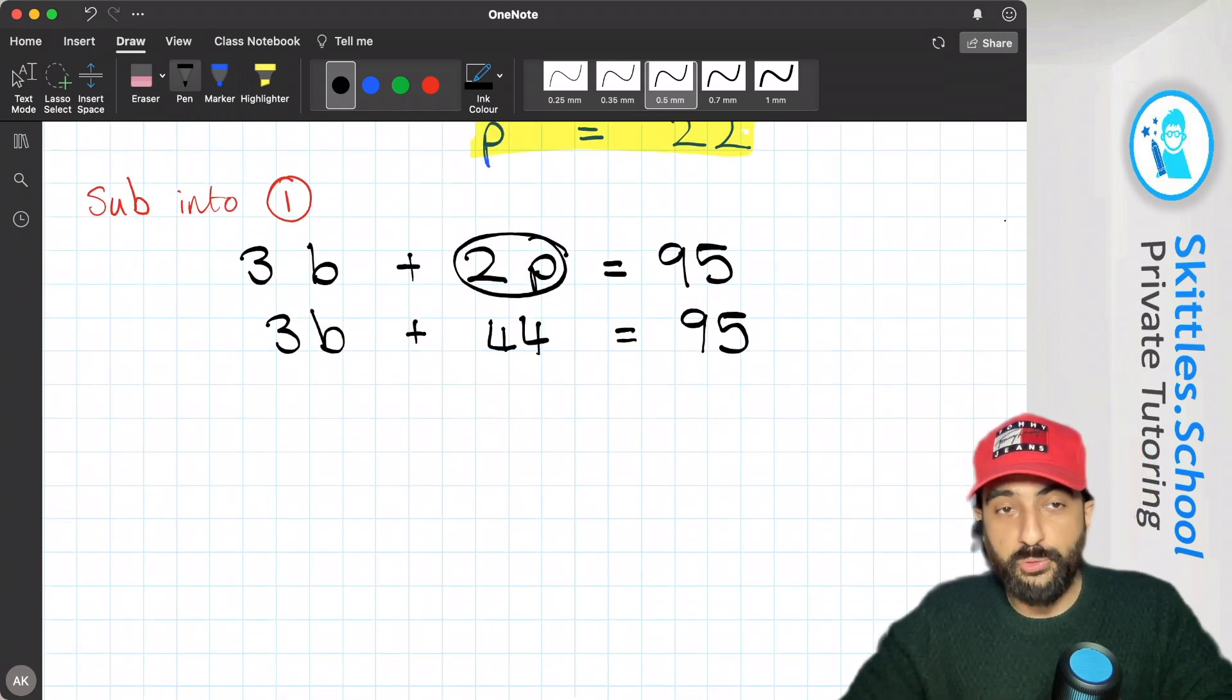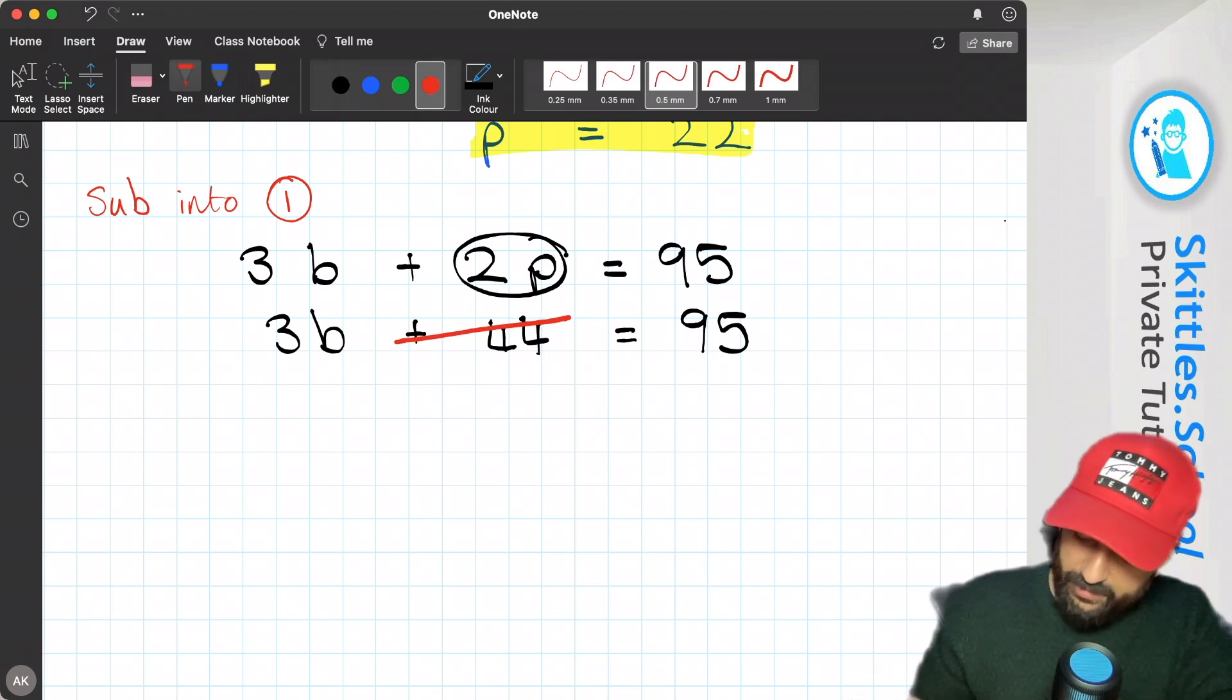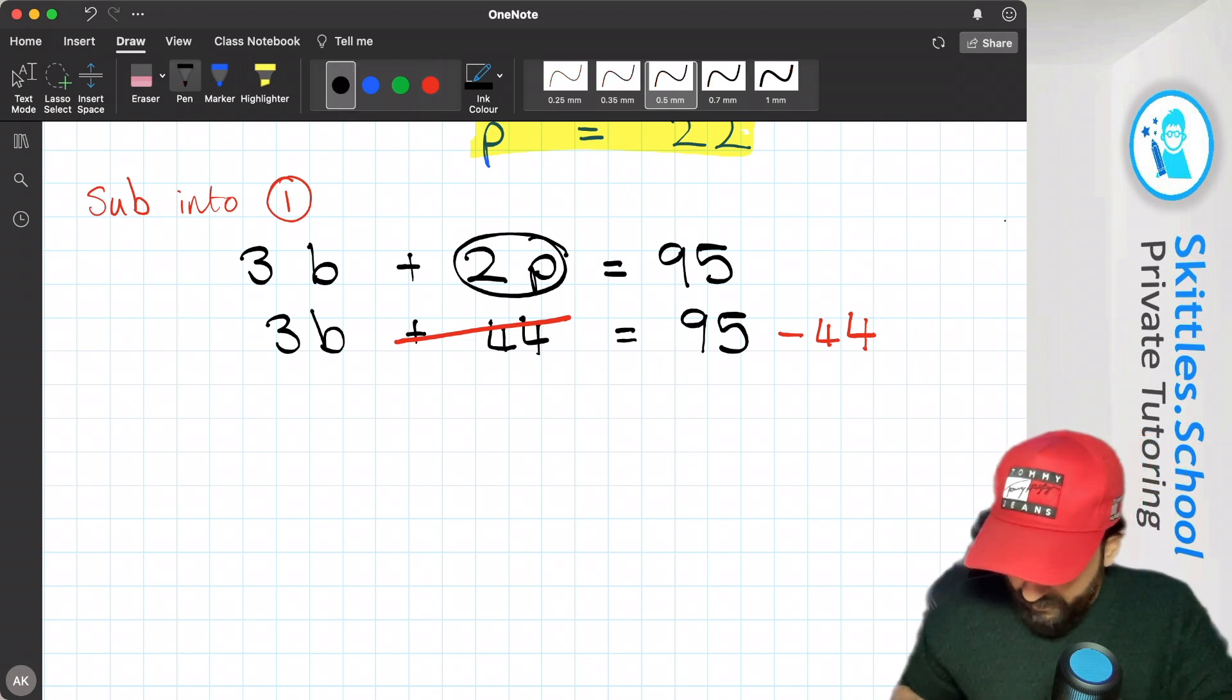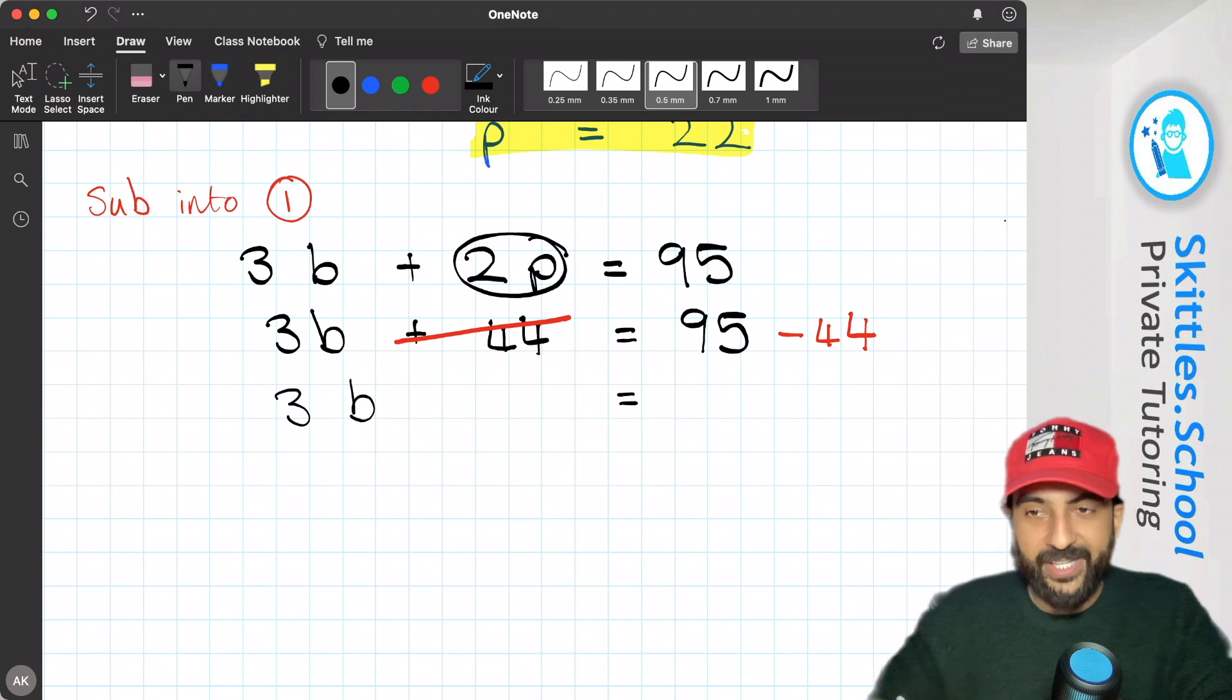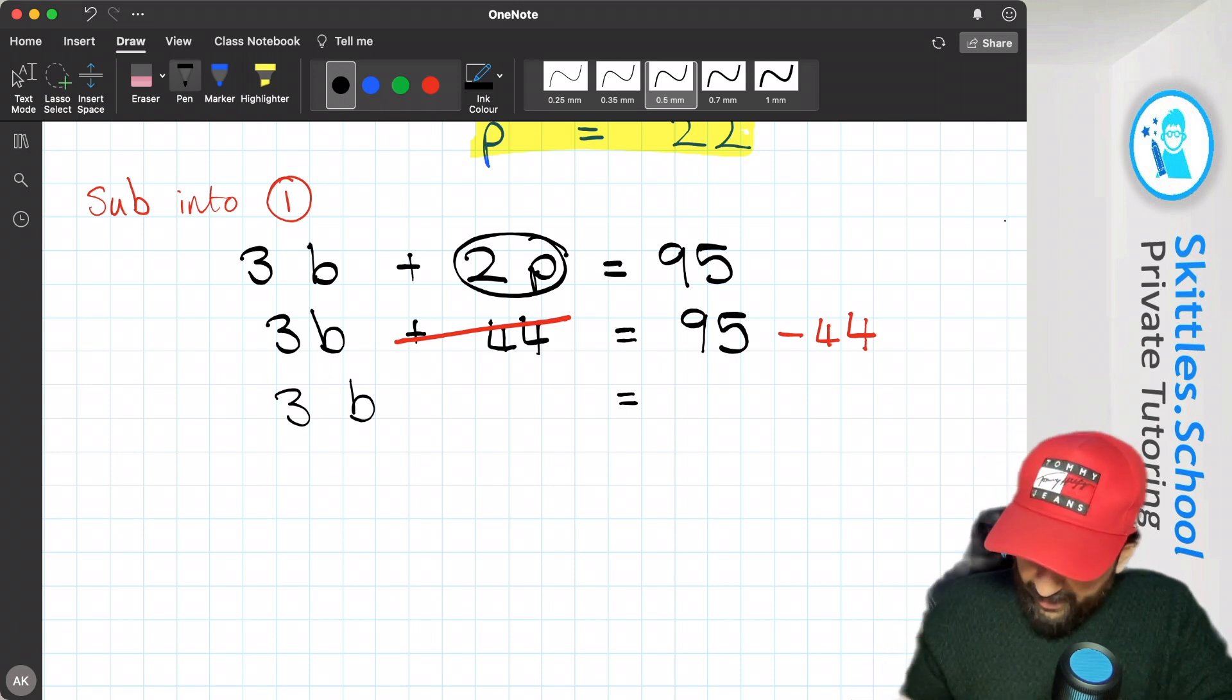If we subtract 44 from both sides, that'll get rid of this. We're left with 3 bananas is equal to 95 subtract 44, and that's 51.